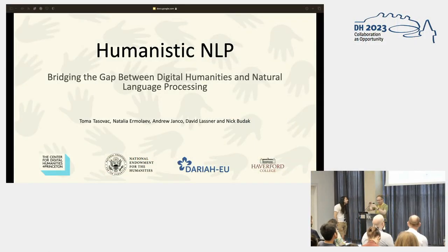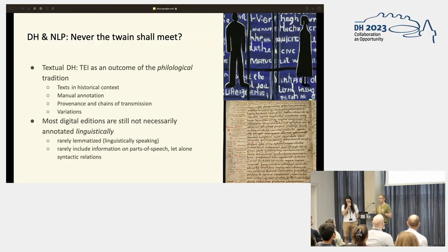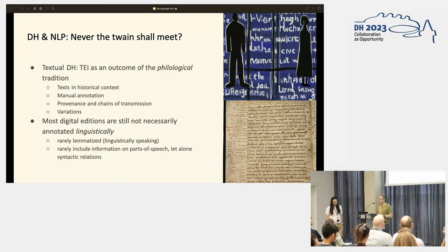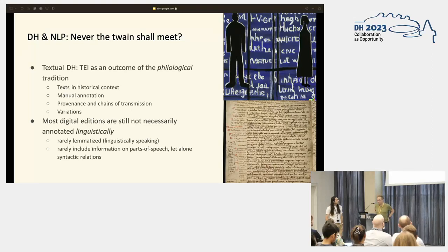Let us start with some good old-fashioned generalizations. There is a very prominent strand in digital humanities — in text-based digital humanities — that focuses on the creation of textual or digital editions. These meticulously curated and mostly manually annotated resources, often encoded following the guidelines of the Text Encoding Initiative, have emerged from the philological tradition as a theoretical and methodological framework for the critical analysis and interpretation of texts.